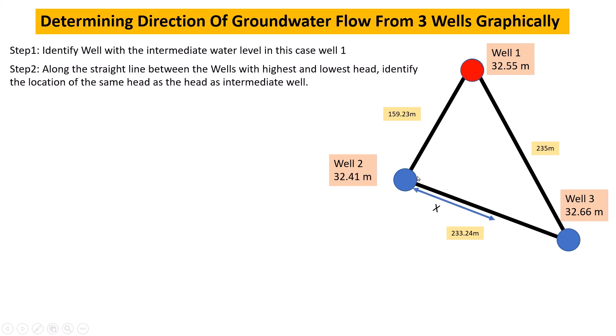Between Well 2 and Well 3, we need to determine the location with a water table of 32.55 meters. How can we determine this?